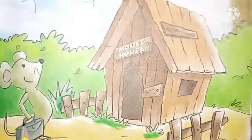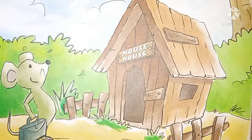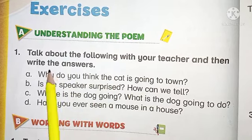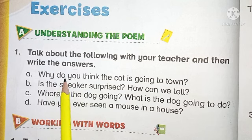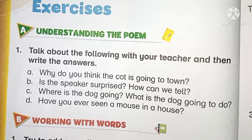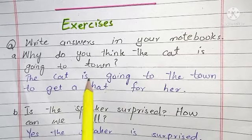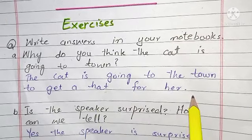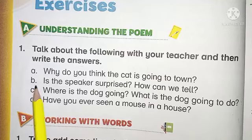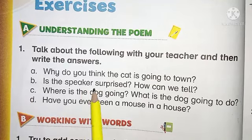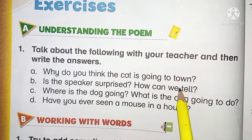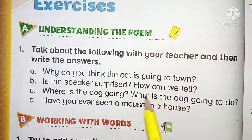So here mouse is going to find a house. Exercises — understanding the poem. Talk about the following with your teacher and then write the answers. Number A: Why do you think the cat is going to town? — آپ کیا سوچتے ہیں کہ billi town کیوں گئی تھی. Number B: Is the speaker surprised? — کیا speaker حیران ہوا ہے یہ سب کچھ سن کر? How can we tell? — ہم کیسے بتا سکتے ہیں۔